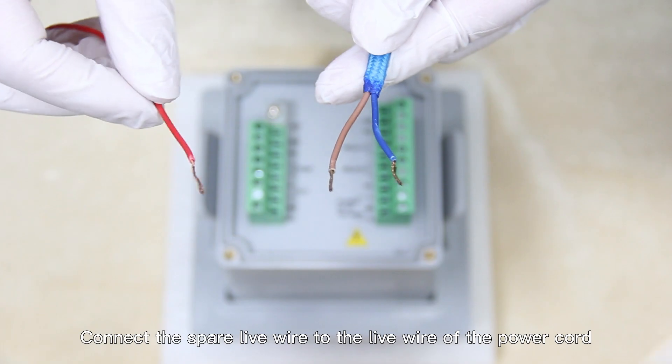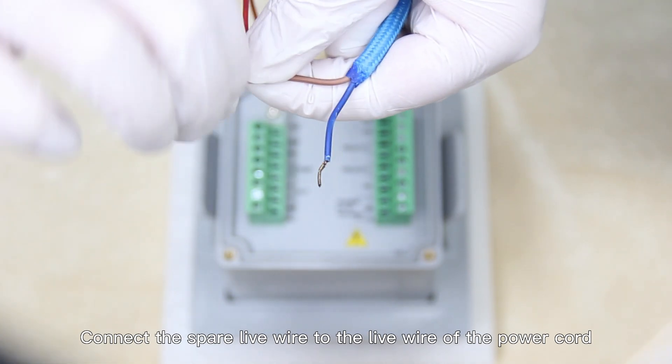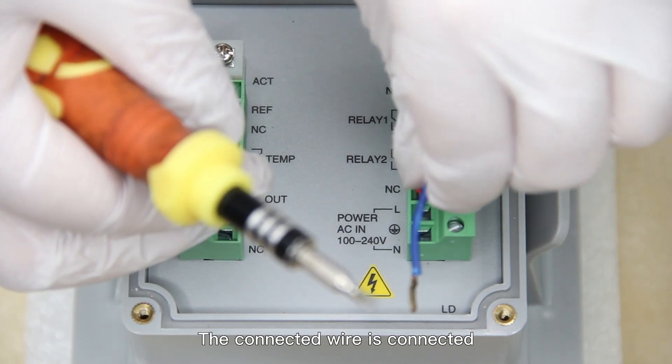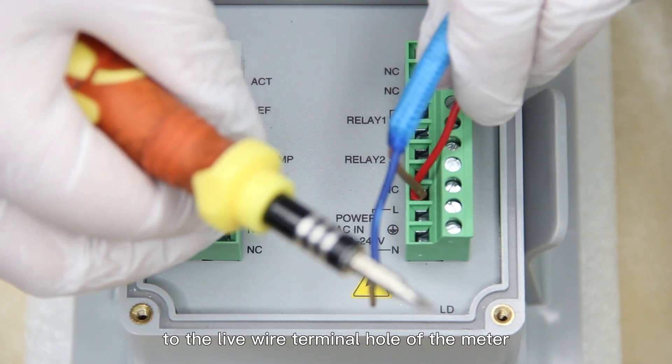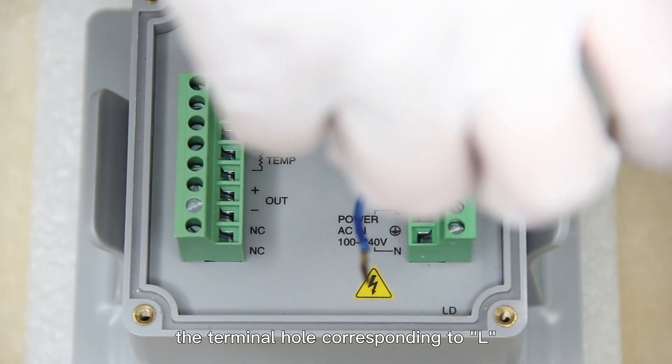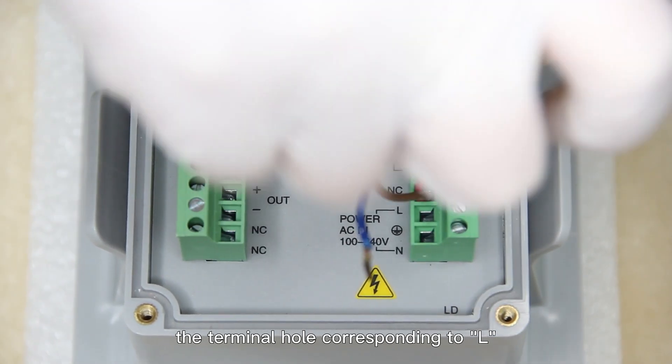Connect the spare live wire to the live wire of the power cord. The connected wire is connected to the live wire terminal hole of the meter, that is, the terminal hole corresponding to L.